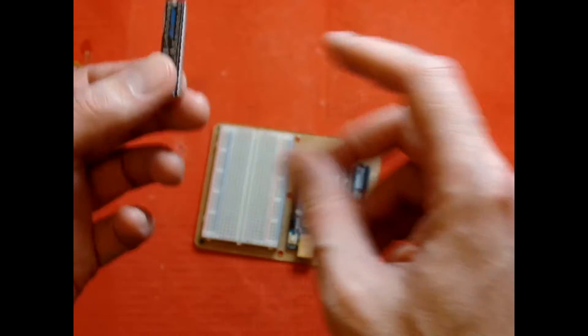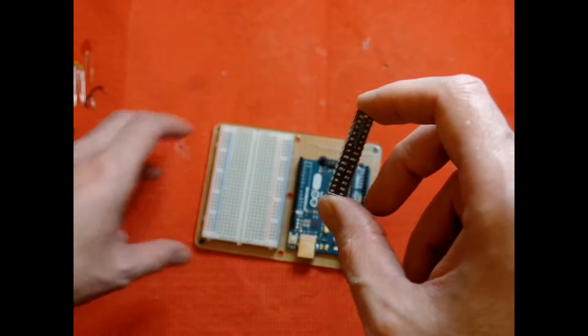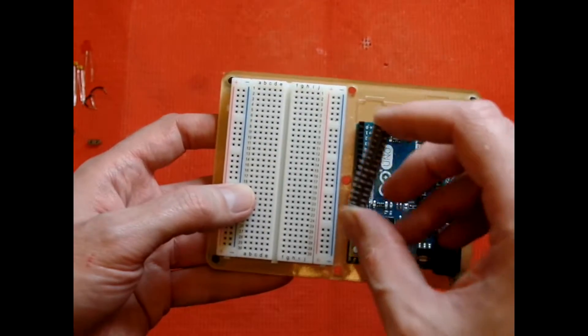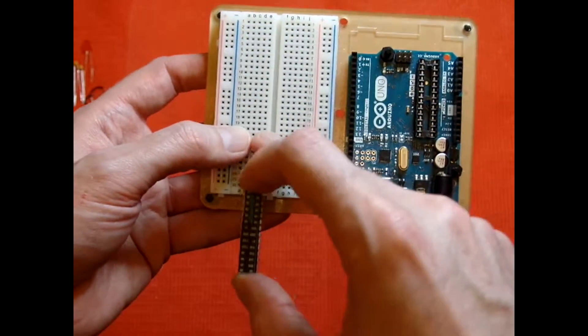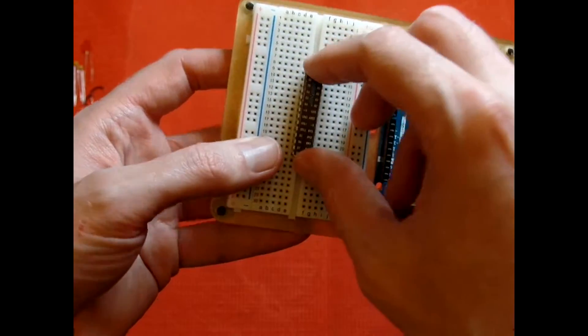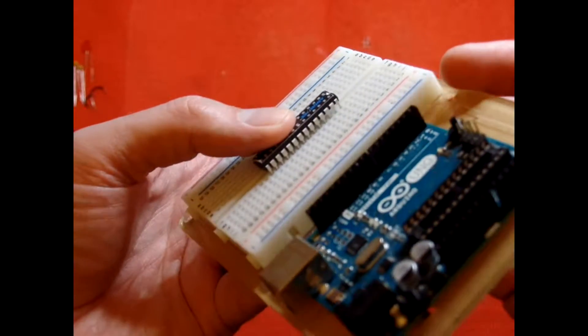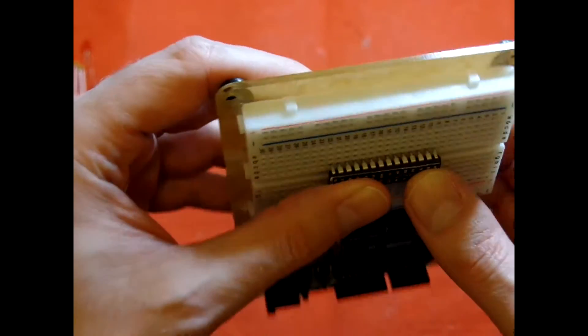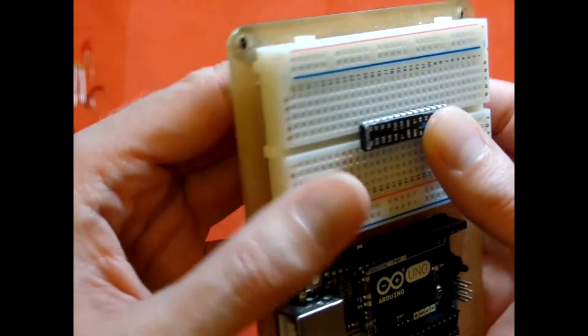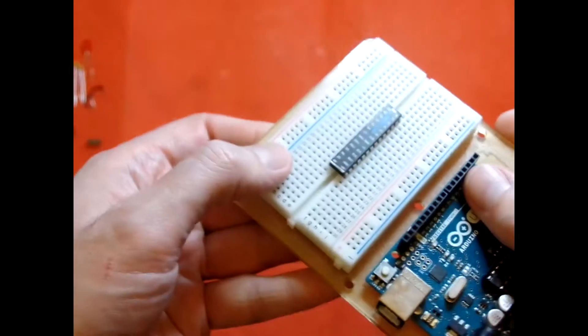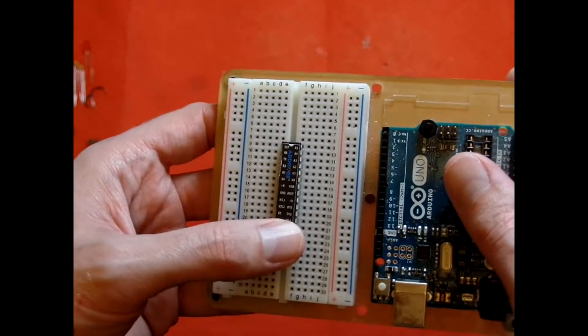We're going to want to place it into the breadboard. Make sure the little notch here is pointing up. And then onto the breadboard we're going to want to bridge the chip across this gap here. Now before you press it down, we're going to make sure that the pins are all going to be placed into a hole so that when we do press down they don't get bent. And they all look pretty good. Okay, so there we go. Now the chip is in the breadboard.